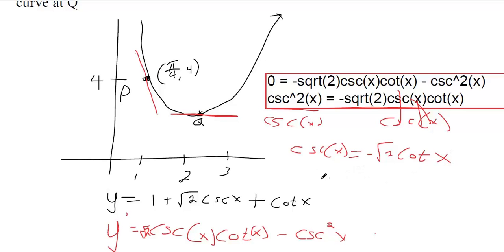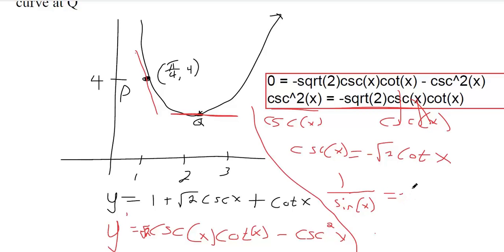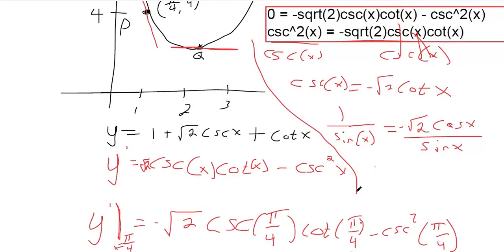Let's put things in terms of sine and cosine. Cosecant is the reciprocal of sine, and cotangent is cosine over sine. So we've got one over sine x equals negative square root of two times cosine x over sine x. Multiply both sides by sine — those cancel — giving one equals negative square root of two cosine x. Divide both sides by negative square root of two, so negative one over square root of two equals cosine x.